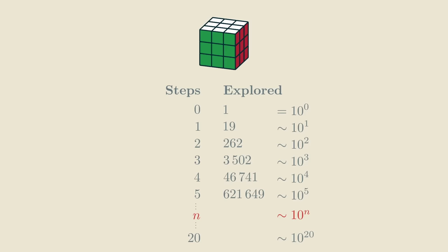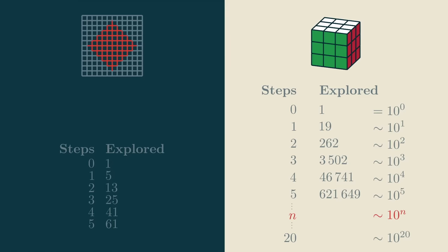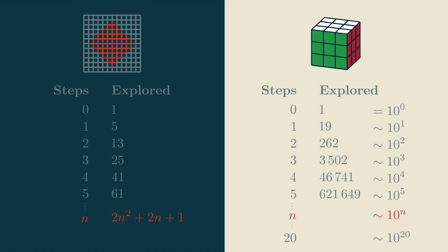That's actually a very special property. Not all graphs have this exponentially fast growth. Let's illustrate that by comparing with a road network graph. Consider this network of crossroads in Manhattan. Here, the number of explored nodes only grows quadratically. After n steps, we explore exactly 2n squared plus 2n plus 1 nodes, which is roughly the same as 2n squared. In 5 steps, that makes 61 nodes, whereas for the Rubik's cube, it's hundreds of thousands.